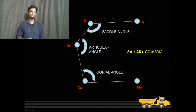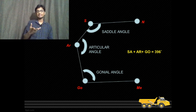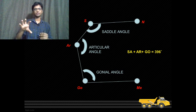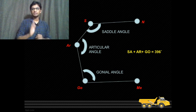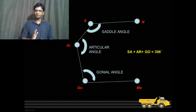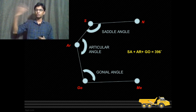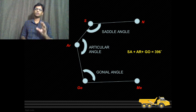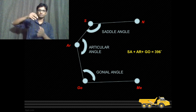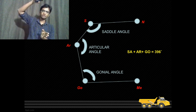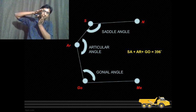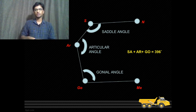When you add all three angles, the sum should be 396 degrees. If it goes above 396 degrees, the patient's growth pattern is considered vertical — a vertically growing, high-angle patient. If it comes below 396 degrees, the patient is showing a more horizontal growth pattern. People with a square face grow horizontally; people with a long oval face grow vertically. A value of 396 represents a normal growth pattern.